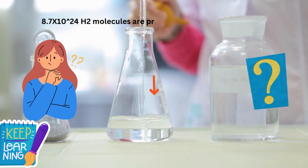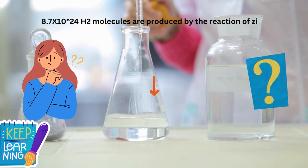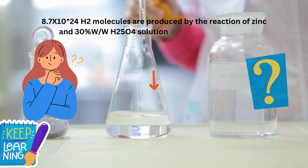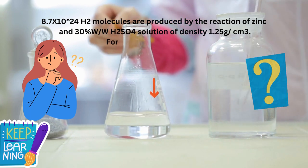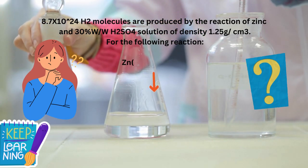8.7 × 10^24 H2 molecules are produced by the reaction of zinc and 30% weight by weight H2SO4 solution of density 1.25 gram per cubic centimeter.